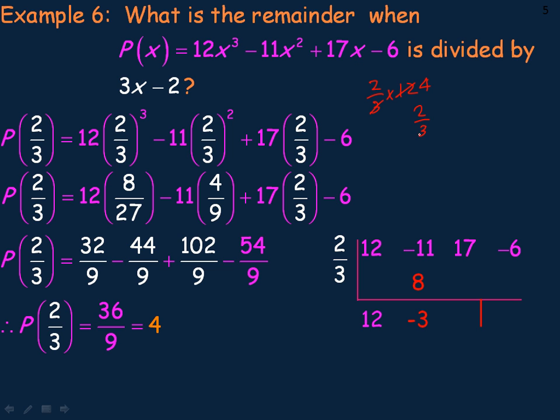Now we multiply that 2 thirds by the negative 3. And 3 goes into negative 3, negative 1 times. So 2 times negative 1 is negative 2. And adding that to the 17, we get 15.